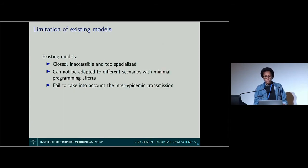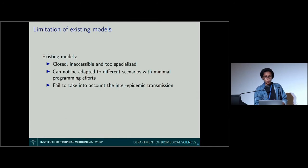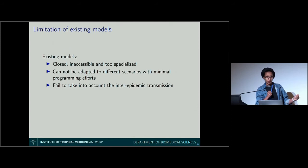There are many existing models, but they have some limitations: those models are very closed, inaccessible, overly specialized, and very hard to adapt to other sites or countries. Those models also fail to take into account what we call inter-epidemic transmission — meaning there is always a sub-latent, low-level transmission occurring even between two epidemics.